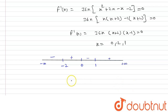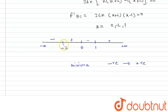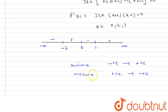We know that for a local minimum, f'(x) goes from negative to positive — meaning the function is first decreasing then increasing. For a local maximum, f'(x) goes from positive to negative — meaning the curve first goes upward then downward.